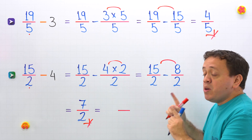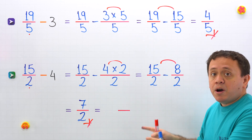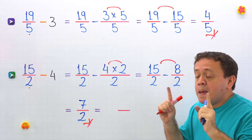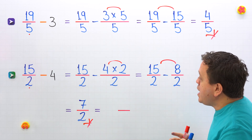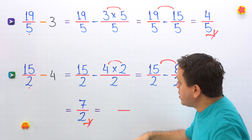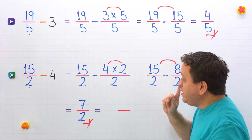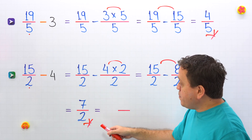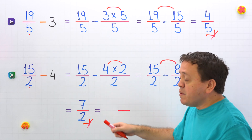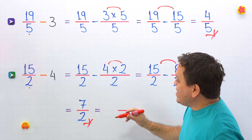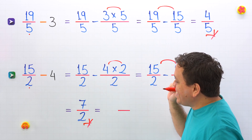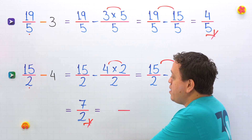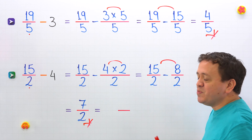But there is something else. We talked about proper fractions; now we are going to see improper fractions. Pay attention — an improper fraction is a fraction where the numerator, the top number, is greater than or equal to the denominator, the bottom number. 7 halves is an improper fraction, given that the numerator 7 is greater than the denominator 2.